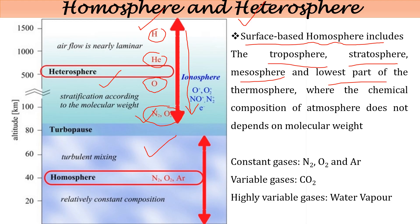In the homosphere, no such separation of gases occurs. The constant gases present in our atmosphere are nitrogen at about 78%, oxygen at about 21%, and argon at about 0.9%. These are called constant gases because their proportions do not vary over time. Variable gases include CO2, and the highly variable gas is water vapor, which varies with place, time, and location across the Earth's surface.